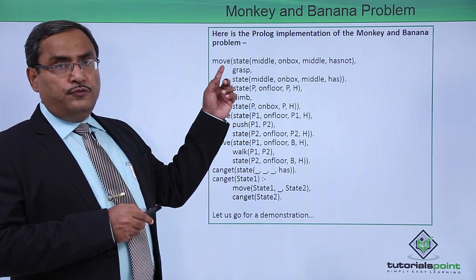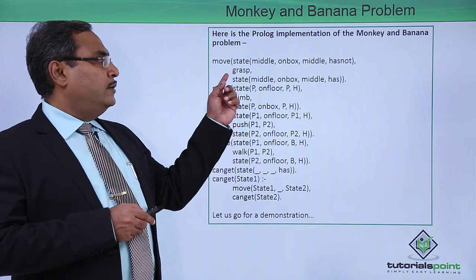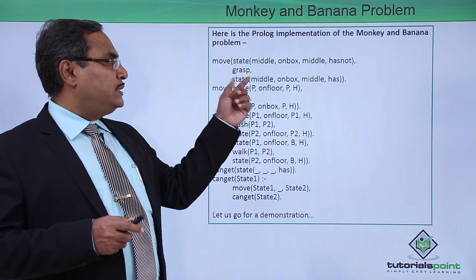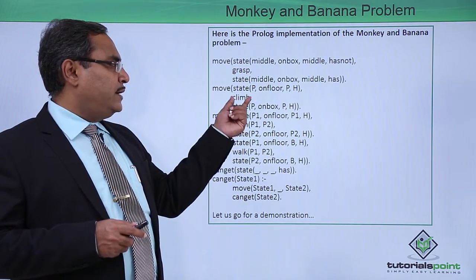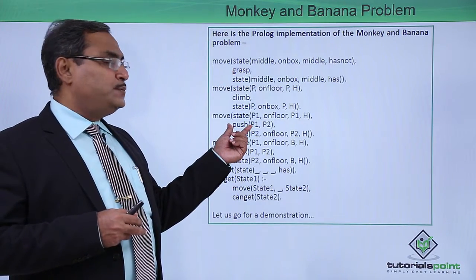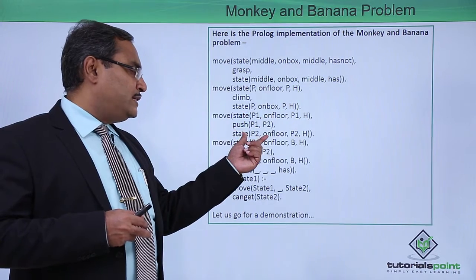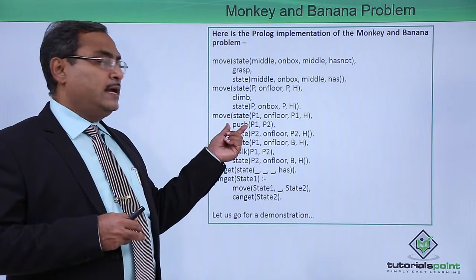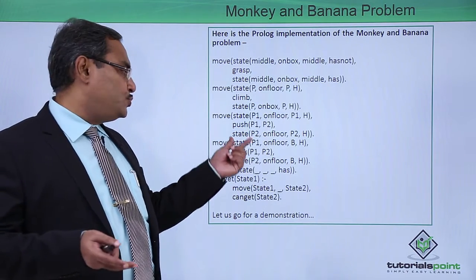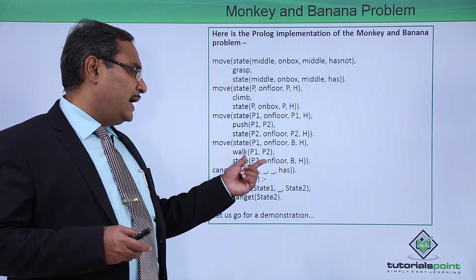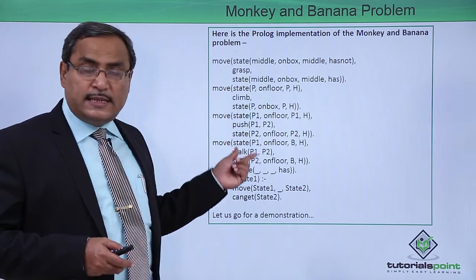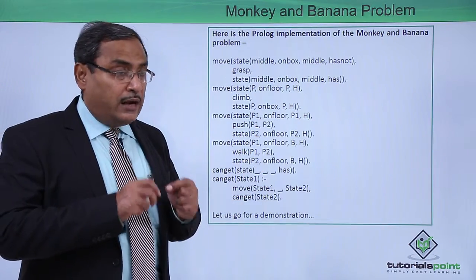So we have a move predicate: from one state to another state through an action. The action 'grasp' moves from one state to another. 'Climb' moves from one state to another state — climbing the block. Then there is 'push' — from one state to another state, the move can take place and the action will be push or drag. And 'walk' — from one state to another state, the move can take place and the action will be walk.